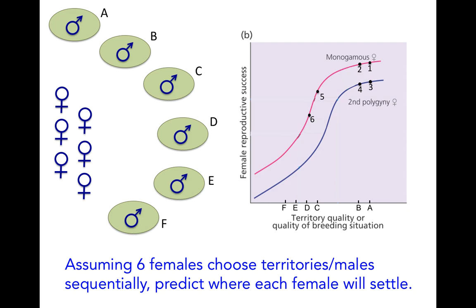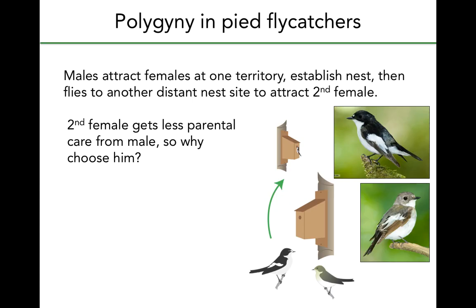Moving on to talk about the experiment with Pied Flycatchers. This species is interesting because unlike red-winged blackbirds where males are in close proximity to other males and females see multiple males at once, in the Pied Flycatcher males often have their nests really far apart. A single male might have a nest where he's mated with a female, and then go 100 or more meters away to establish a second nest and try to attract a female there. We've talked about the fact that being a second female for a single male should impose costs, so the question is why do females choose those males?